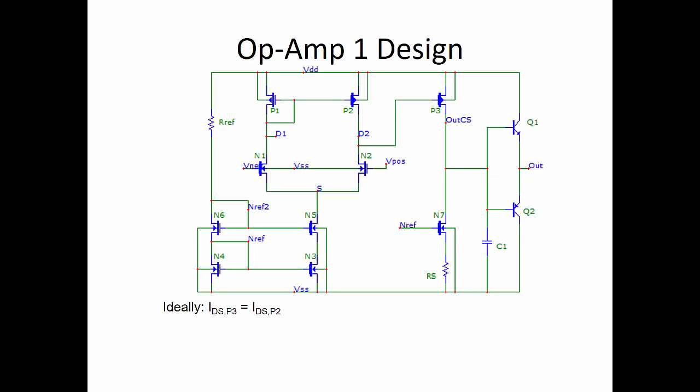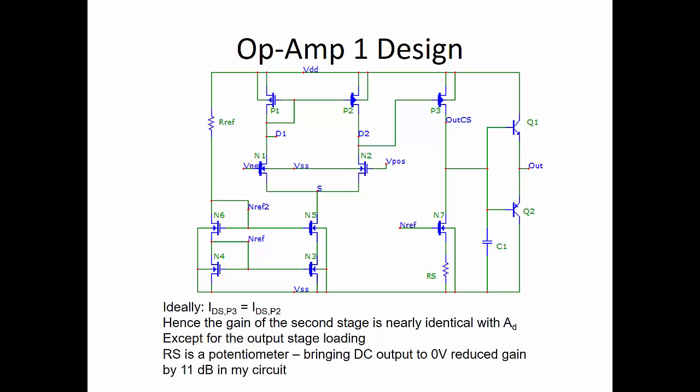So in the task manual, I've given you several examples. The first one essentially takes the differential pair that you did in Task 3, adds a common source amplifier to it, and then uses a class B output stage. Keeping in mind that the bias current of that PMOS, B3, is the same as the PMOS, P2, the gain of that second stage is nearly identical to the gain of the differential stage. The only difference here is going to be the output stage loading.